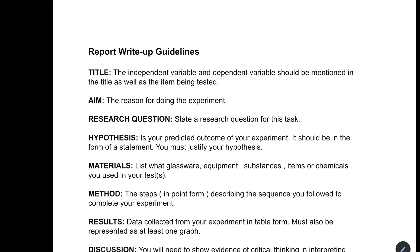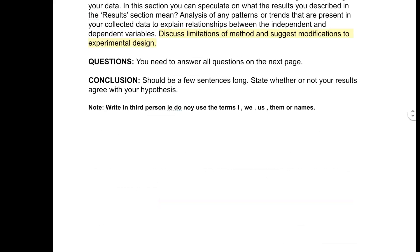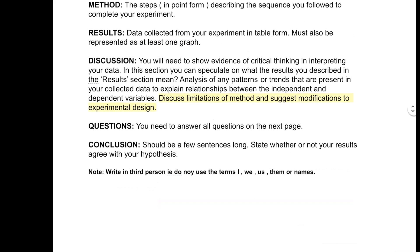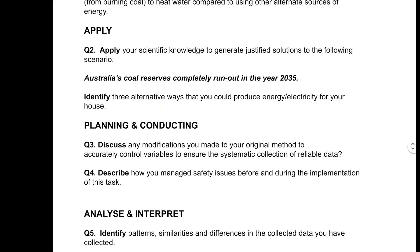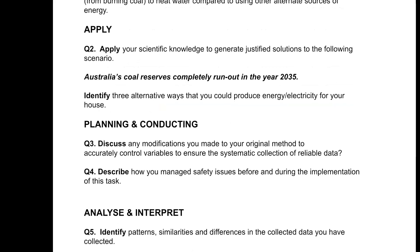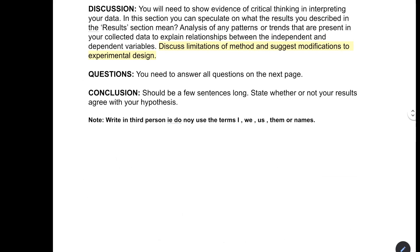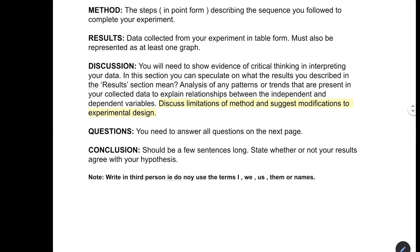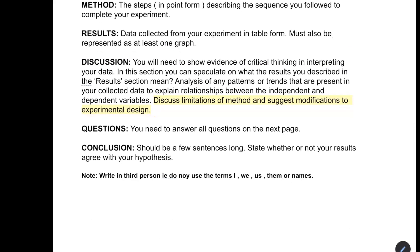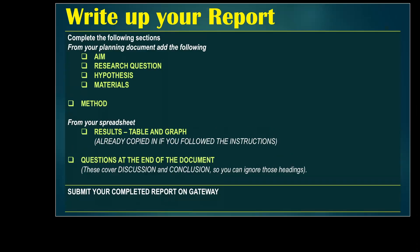Every single one of these titles must be filled in. However, the discussion and conclusion on there is actually answered down here in these questions. So if you answer all of these questions, you don't need to separately answer the discussion and conclusion — you've already done it in those questions. From your planning document you should be able to fill in your aim, your research question, your hypothesis, and the materials, thanks to that drawing I made you do and label.